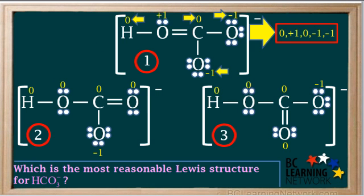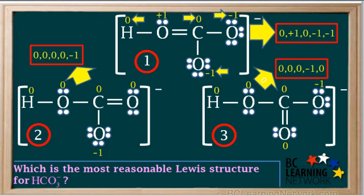In structure 1, there is a plus one and two minus ones. In structure 2, there are four zeros and one minus one. And also in structure 3, there are four zeros and one minus one. We see that the combination of formal charges is closer to zero in structures 2 and 3 than it is in structure 1.